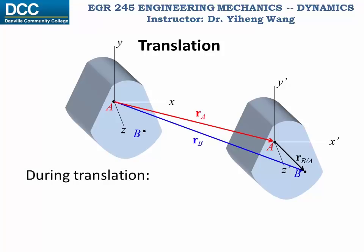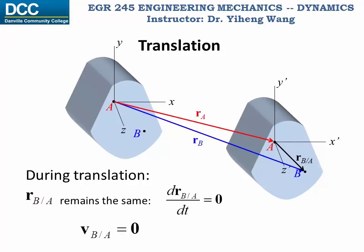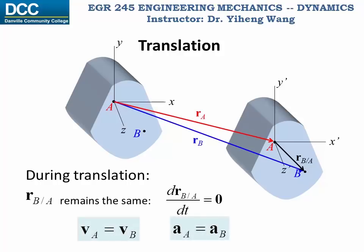During translation, this relative position vector remains the same — its time derivative is zero — which means that the position of point B is always the same relative to point A. The relative velocity of point B is also zero, and the relative acceleration of point B is also zero. This means that for any two arbitrary points on the rigid body undergoing translation, the two points will always have the same velocity and acceleration.